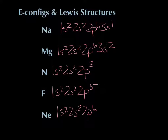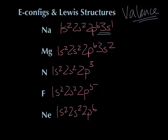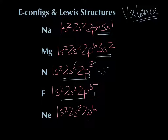The key with electron configurations is remembering that when we talk about bonds, the only electrons we care about are the valence electrons — the ones on the outside in the highest number energy level. Sodium has one valence electron, magnesium has two. Nitrogen is trickier: two from 2s and three from 2p gives five valence electrons. Fluorine has two plus five — seven valence electrons. Neon has eight valence electrons total.